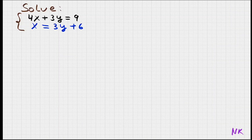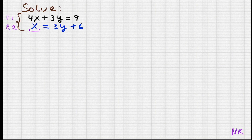Here we have to solve 4x plus 3y equals 9 and x equals 3y plus 6. Let's call 4x plus 3y equals 9 row 1, and x equals 3y plus 6 row 2. Notice in row 2, x is all by itself and equal to 3y plus 6 — we already have it solved for x. So I'm going to use the expression 3y plus 6 and substitute it for x into the row 1 equation.